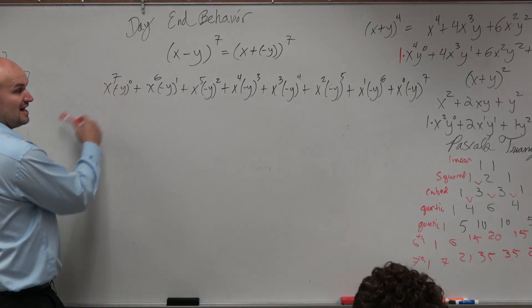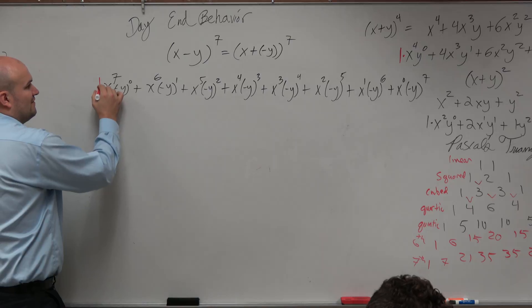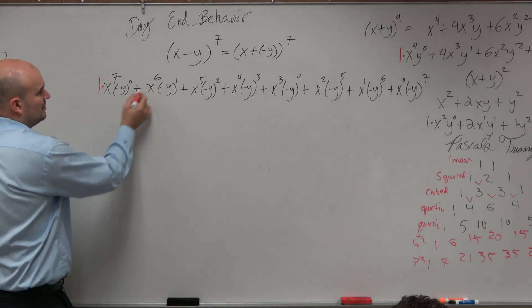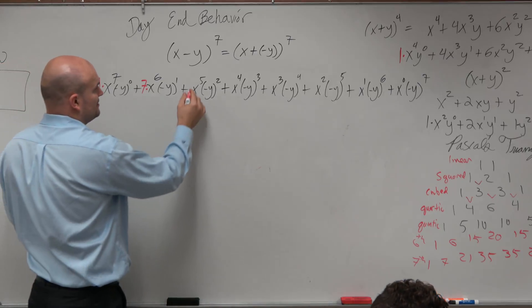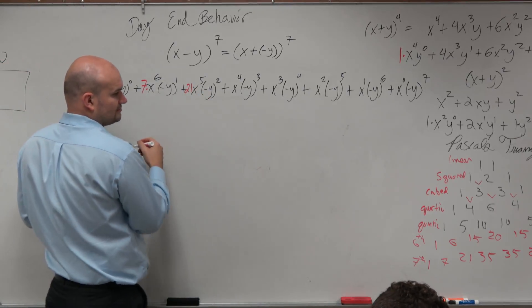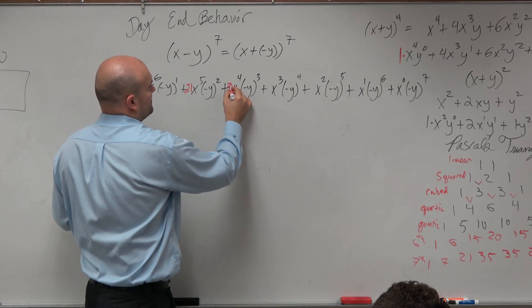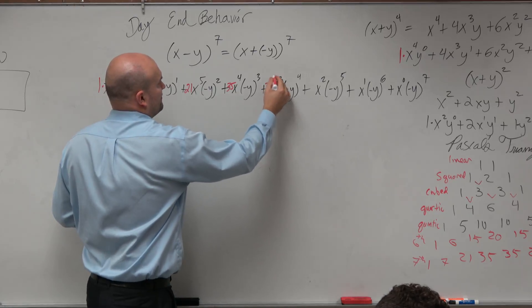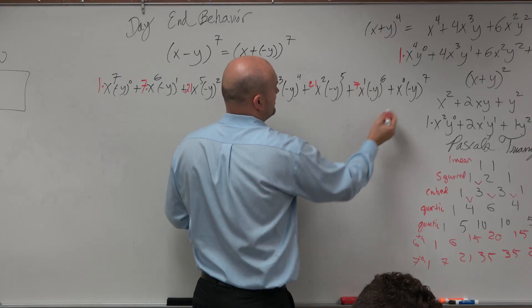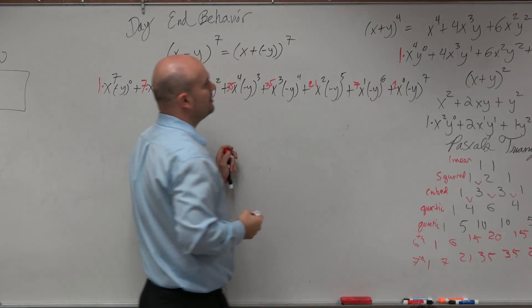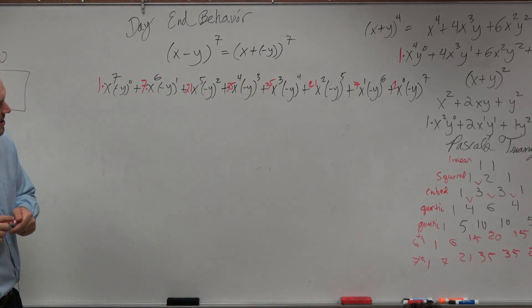So then we've got to take our coefficients. Again, this is from Pascal's triangle. Each coefficient has its own pattern as well. 1, again I'm taking these from Pascal's triangle, 7, 21, 35, 35, 21, 7, and 1. Now those are all multiplied by there.